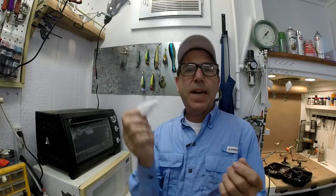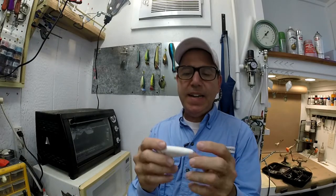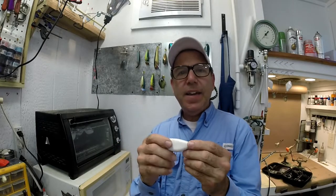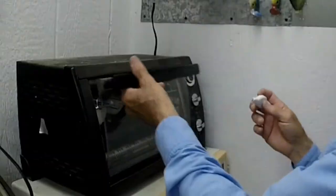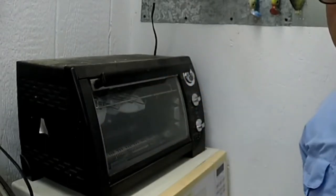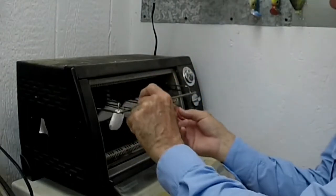I take my lure straight from the mold. I give it a quick sanding to get rid of the flashing and anything really heavy. I'll cut off the sprue plug and then I'll bring it directly to my little makeshift old toaster oven.